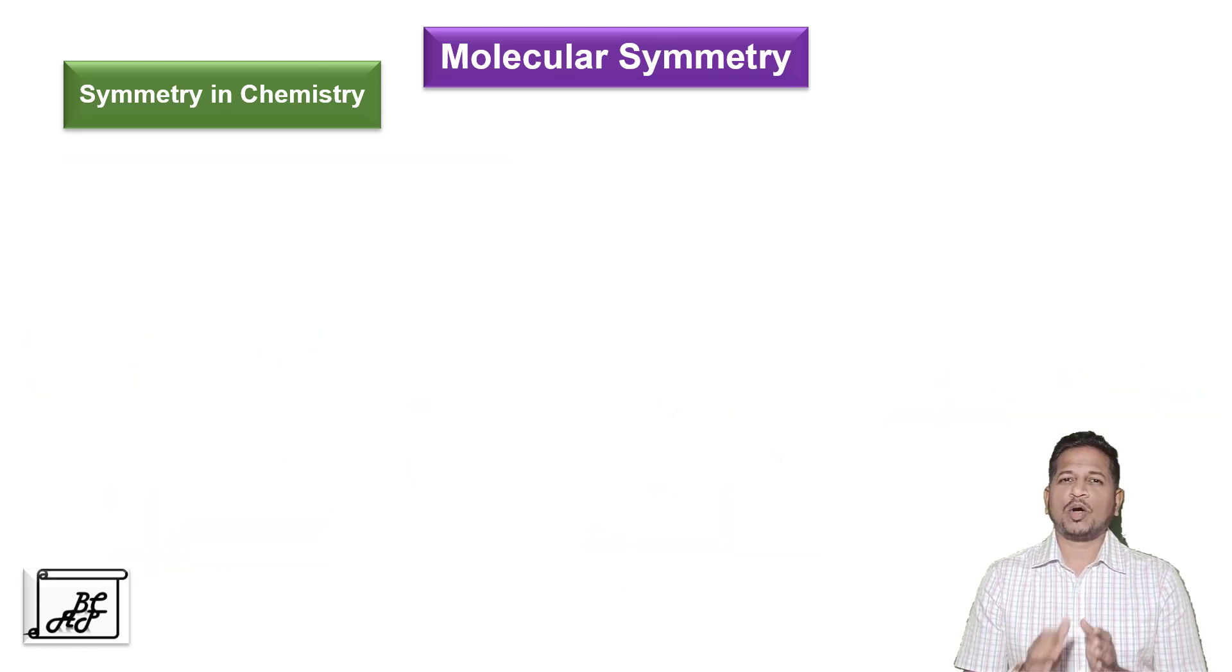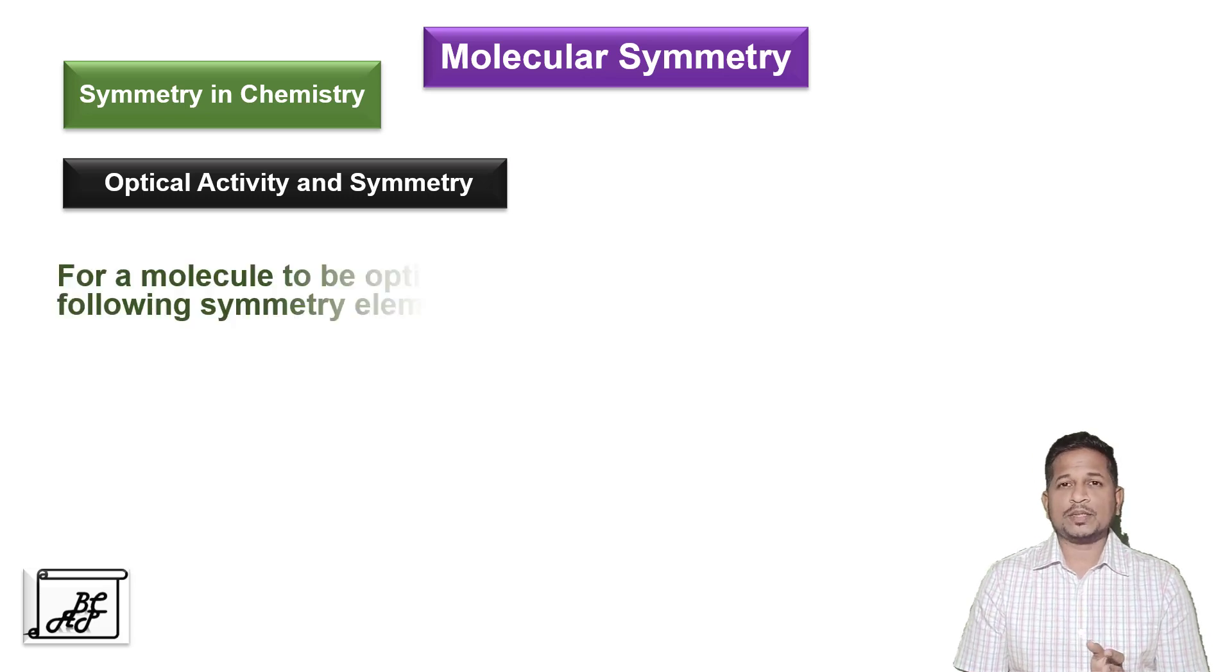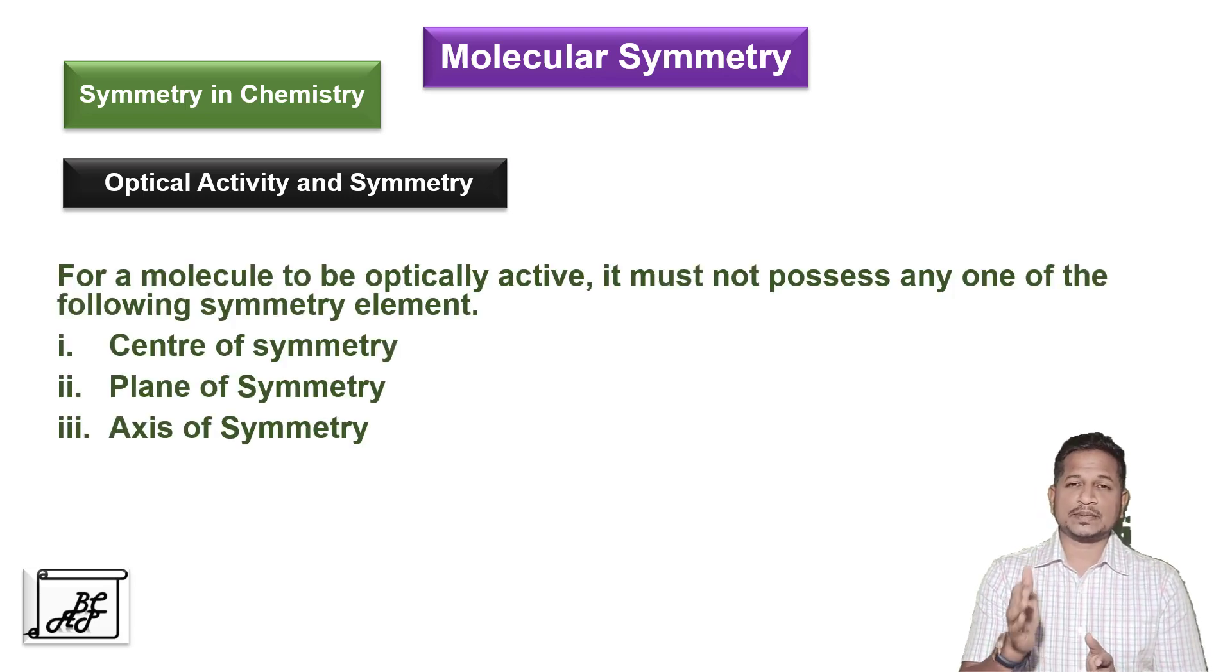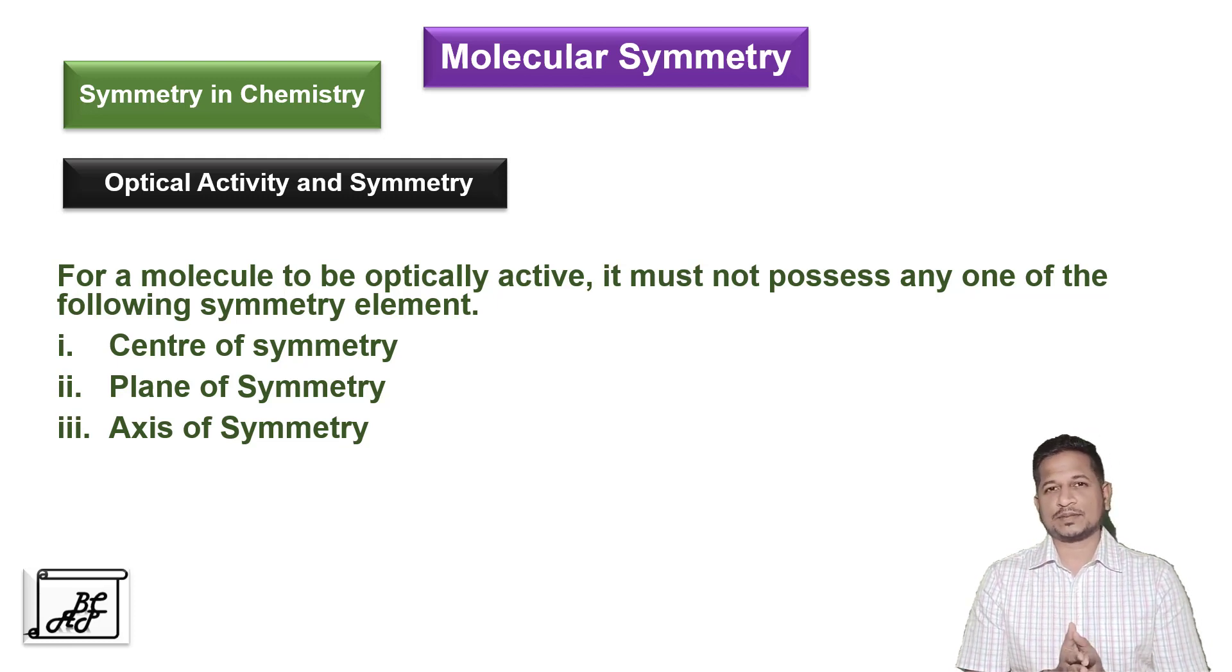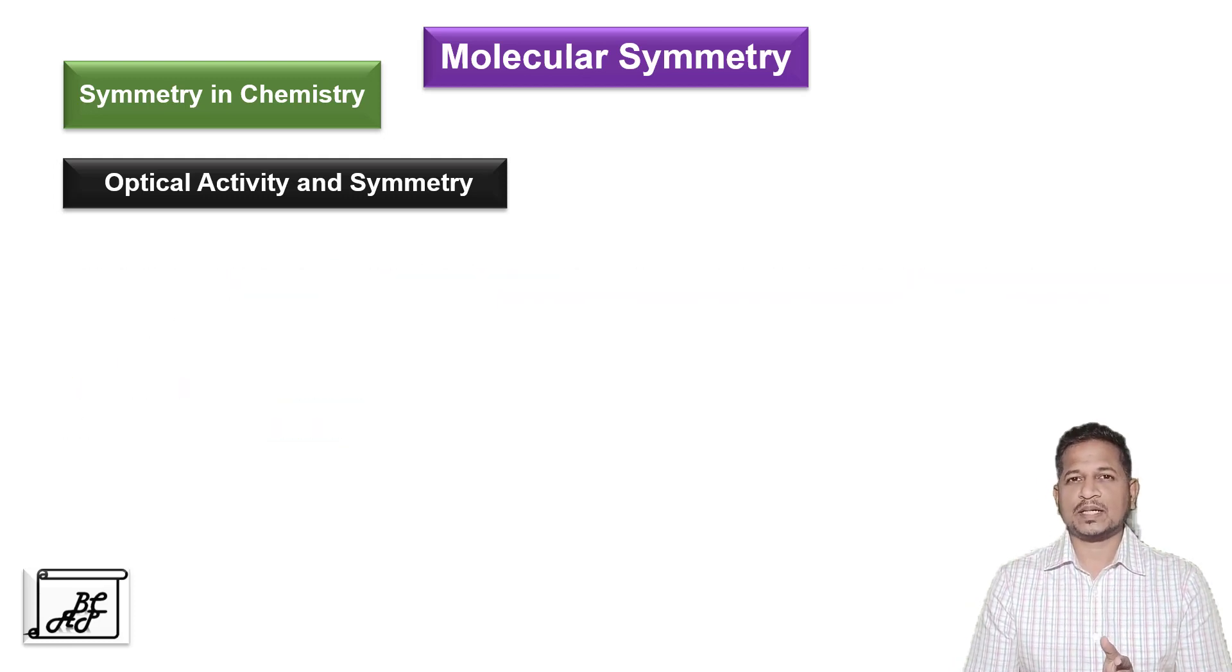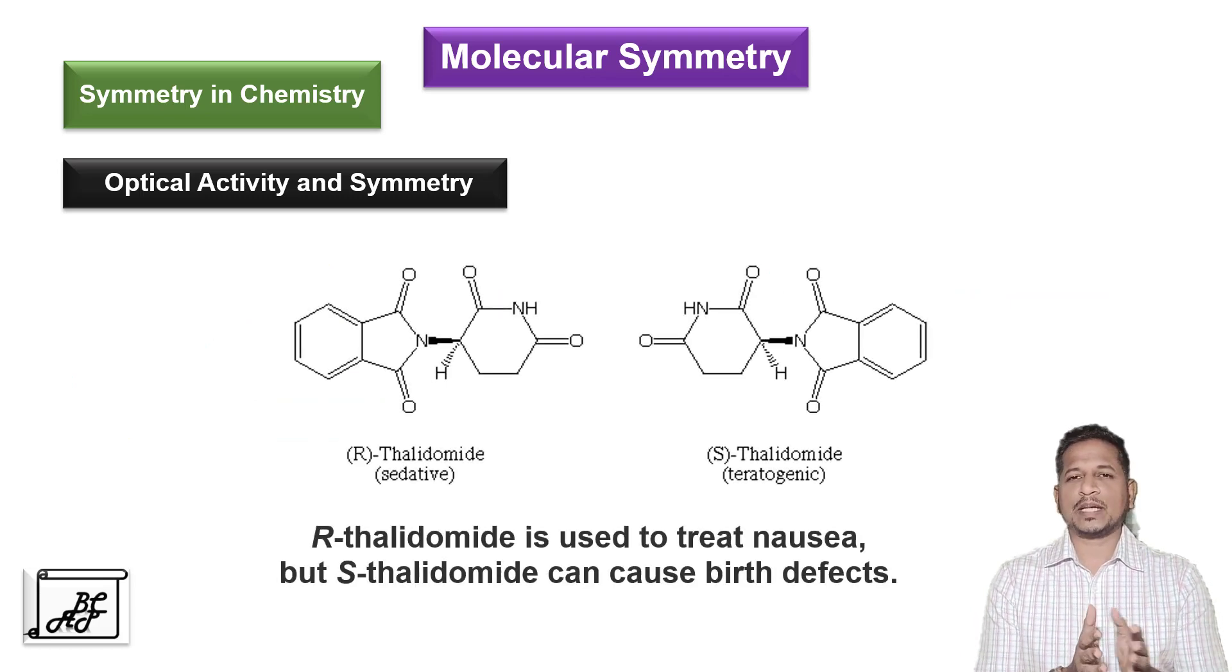Let's study how optical activity is associated with symmetry. A molecule is said to be optically active if it does not possess center of symmetry, plane of symmetry or axis of symmetry. This we can understand with the example of thalidomide.